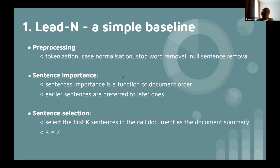Lead-N is a simple baseline popular in summarization. After preprocessing the document by tokenization, case normalization, and so on, you select the first N sentences as the summary. Sentence importance is simply a function of document order. We set N to seven, so we select the first seven sentences as the summary.